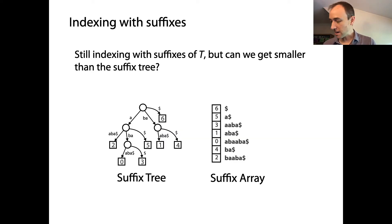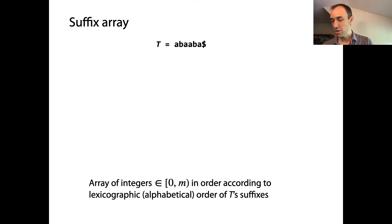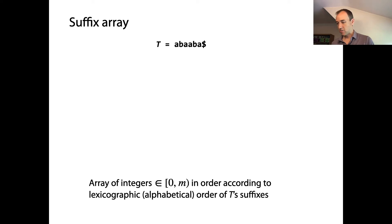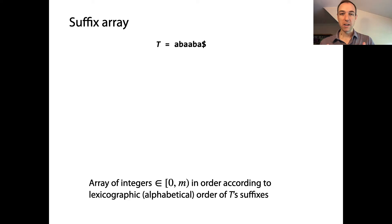The suffix array is actually fairly simple to describe compared to the suffix tree. As always we have our text T, and our suffix array data structure is going to be an array of integers from 0 up to m, the length of the string T, in order according to the lexicographical or alphabetical order of T's suffixes.